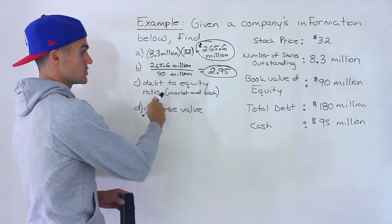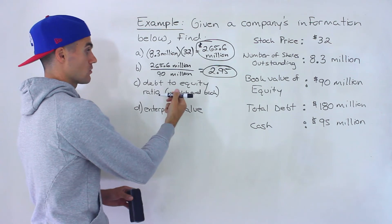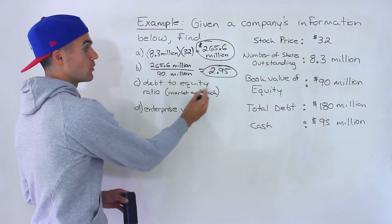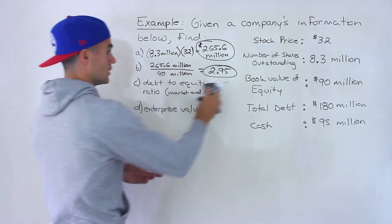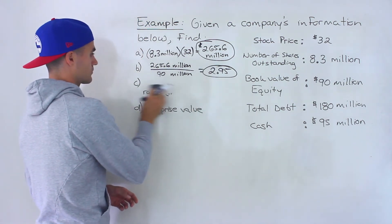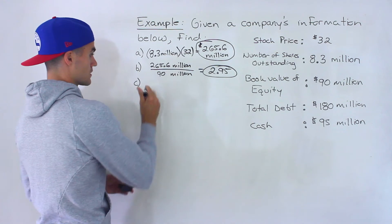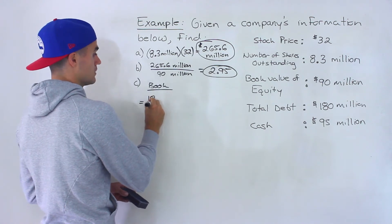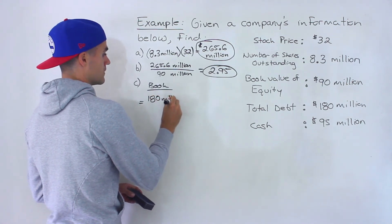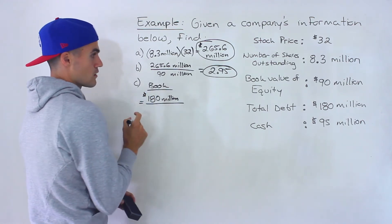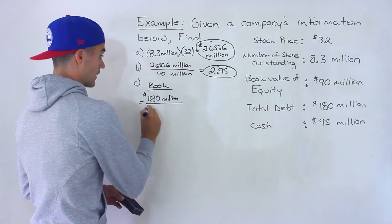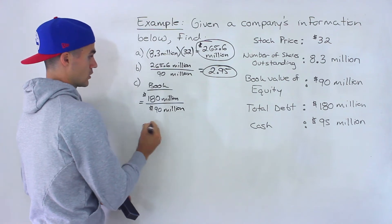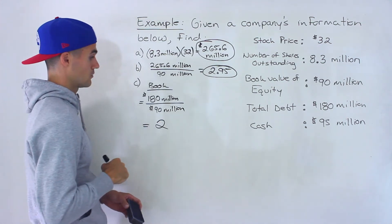Now notice here for C, we're asked for the debt to equity ratio, but we're asked for the market and book. So that means the debt to market value of equity ratio, and then the debt to the book value of equity ratio. So there's two calculations for C. Starting with the book debt to equity ratio, we would take the total debt, 180 million, and divide it by the book value of equity, which would be 90 million. And that's going to give us 2, a nice round number.